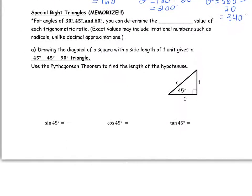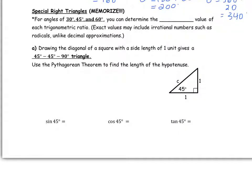The next part of this section involves knowing two special right triangles — you do need to memorize these. For angles of 30 degrees, 45 degrees, and 60 degrees, we can determine the exact value of each trigonometric ratio. Exact values do not include decimals, so when asked for an exact value, never divide your answer out as a decimal. Leave your answers as fractions and with root signs.